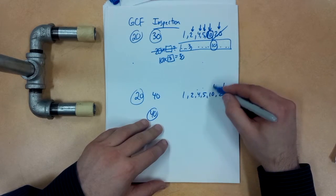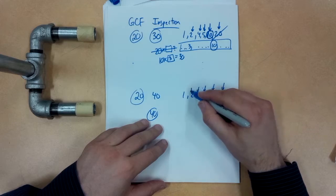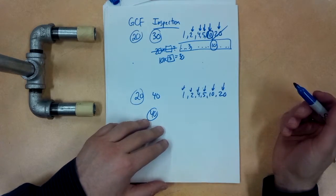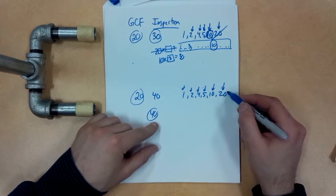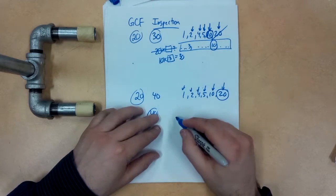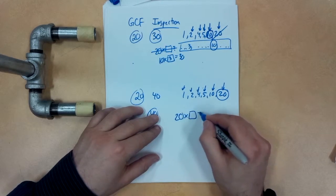I'm just going to look at these factors of the smaller number and see which is the greatest number that works. So I'm not even going to test other numbers other than these ones. So I'm going to start at the biggest number. Is there 20 times something gives me 40?